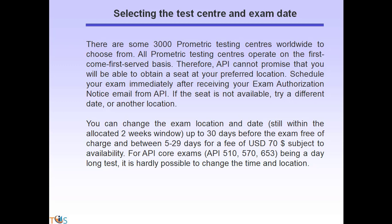There are about 3,000 Prometric testing centers worldwide, all operating on a first-come, first-served basis. Therefore, API cannot promise a seat at your preferred location. Schedule your exam immediately after receiving your exam authorization notice email from API. If a seat is not available, try a different date or another location. You can change the exam location and date within the allocated two-week window up to 30 days before the exam free of charge, and between 5 to 29 days for a fee of $70, subject to availability.